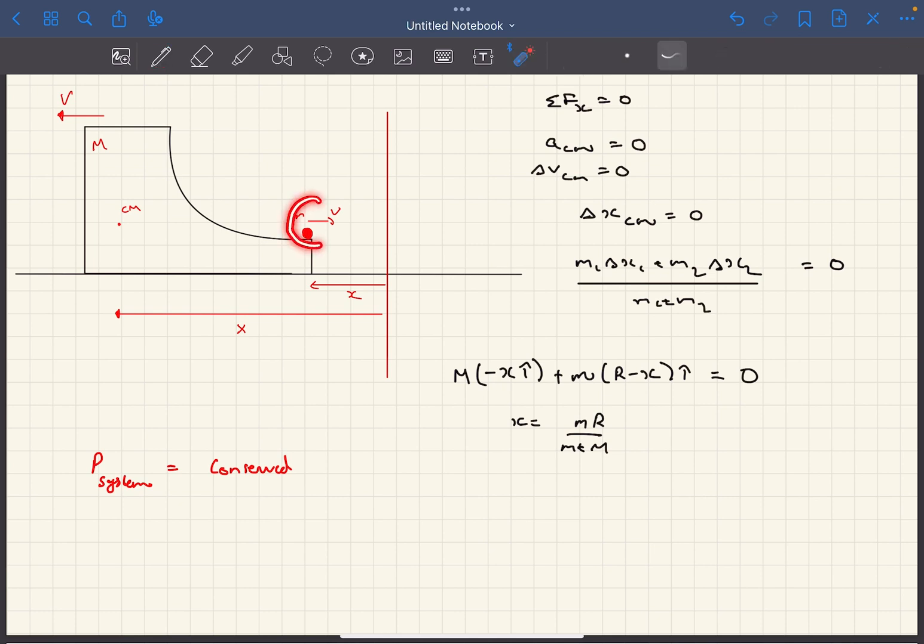And finally, it is mv i-cap minus capital M times capital V in the minus i-cap. So we can simply say small m times small v equals capital M times capital V. So this will be our first equation.